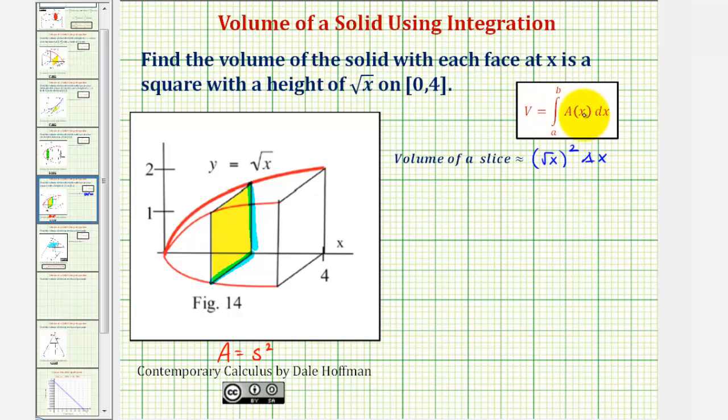The reason this integral gives us the volume is because the volume would be approximately equal to the sum of the volume of the slices, which you could write as the sum of A(x_i) times delta x_i. But as the number of slices approaches infinity, the value approaches the volume.